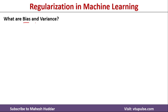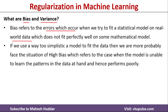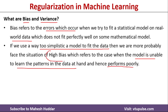Now we define two important terms: bias and variance. Bias refers to the errors when we try to fit a statistical model on real-world data that does not fit perfectly on some mathematical models. When we choose a very simplistic model to fit the training data, the model is unable to learn patterns in the data and performs poorly. Such a situation is known as high bias.